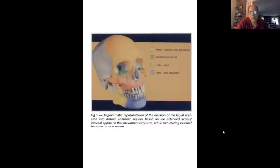This is part of that article on extended access internal approaches. The part in red is the bicoronal approach. The green, which is the orbital area, is a trans-conjunctival approach. The pink part is the sublabial approach. And then the middle portion of the mandible can be accessed with the intraoral mandibular approach.